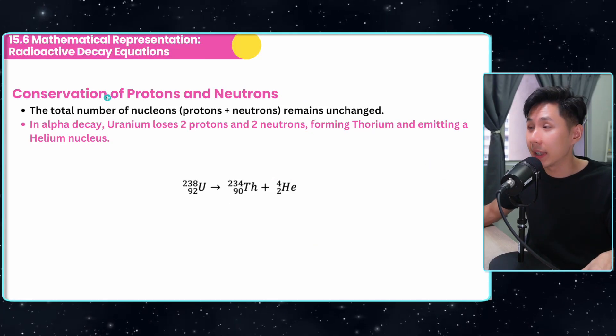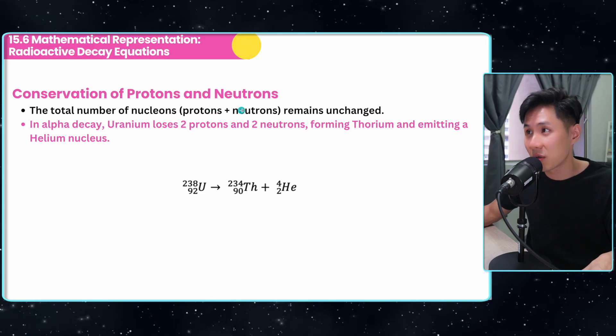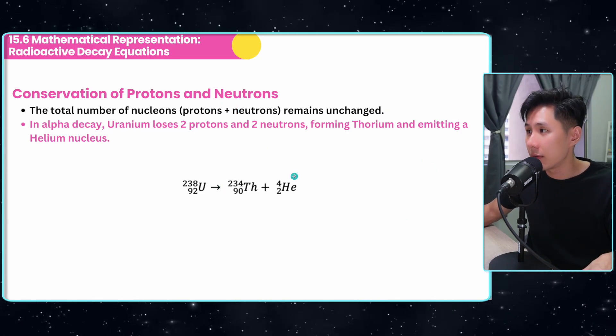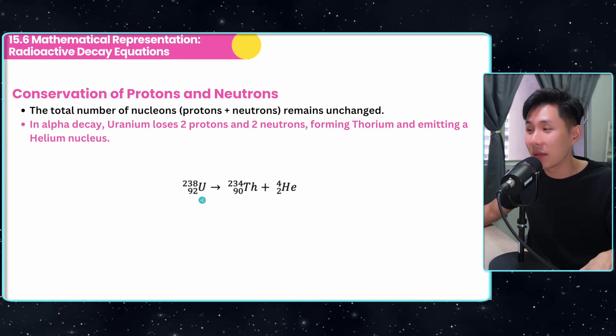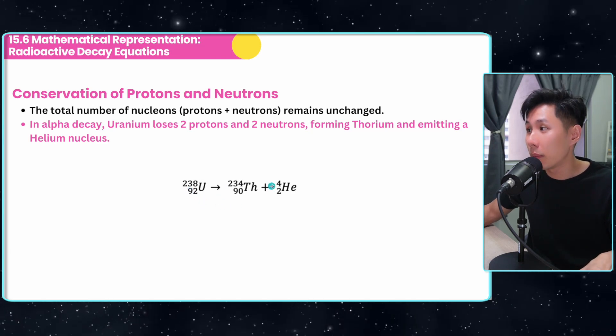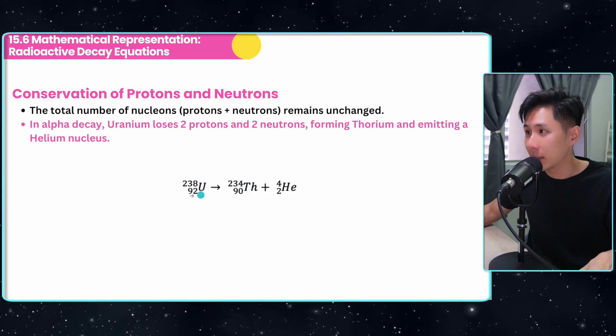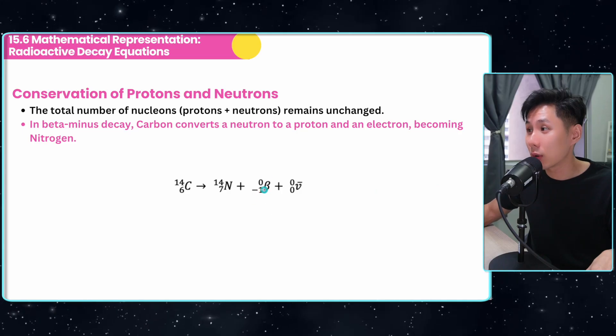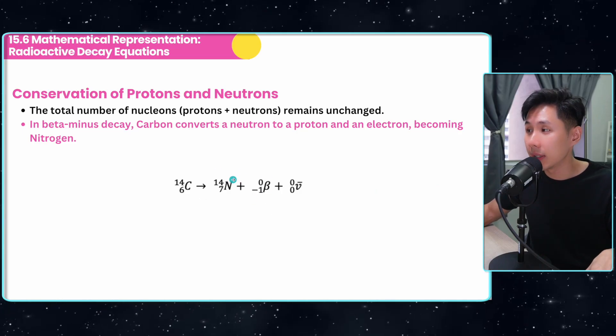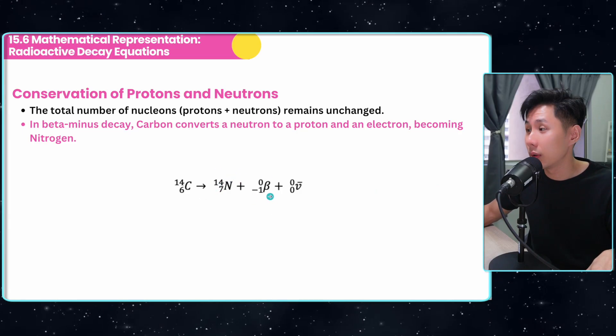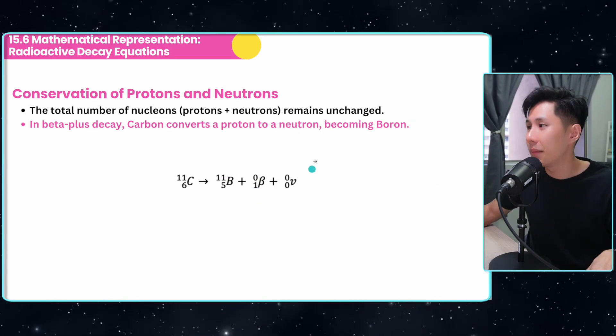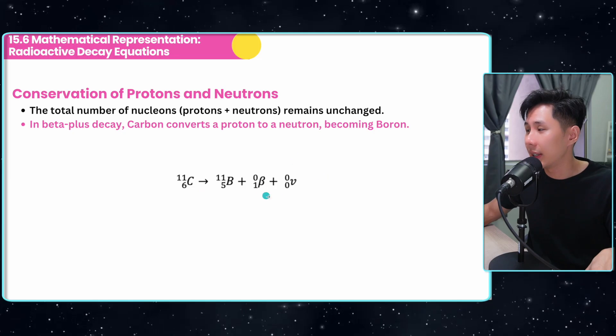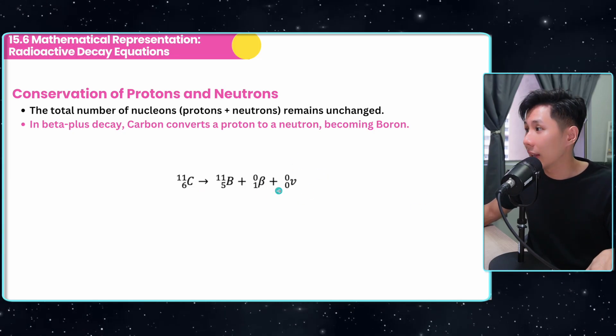For all the decays, they all obey the same law: conservation of protons and neutrons. If you look at alpha decay, before and after the number of nucleons and the number of protons are conserved. 234 plus 4 equals 238, 90 plus 2 equals 92. Same goes for beta minus decay. Even though they have released one more electron, the original nucleus has one additional proton to balance out the electron. Beta plus is the same, left-hand side equals right-hand side. This is the antineutrino, which has no charge.